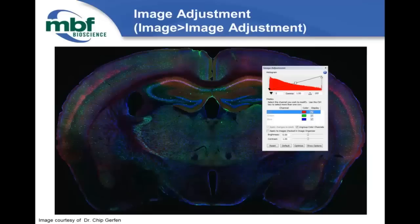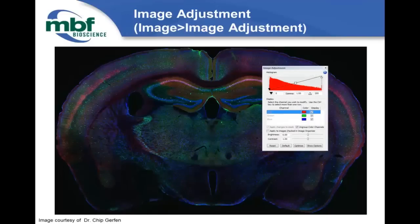First, we're going to talk about image adjustment. Typically when you first load an image into our software, you may need to adjust it. To do any adjustments, go to Image > Image Adjustment and this dialog will appear. In this dialog, you can adjust the dynamic range — the dark point or the white point — to help make items pop or make the signal a bit brighter. You can also adjust the brightness and contrast. In this example we have a multi-channel image with three channels: red, green, and blue.